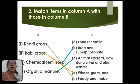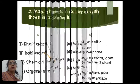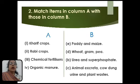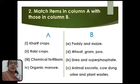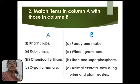urine and plant waste. So the answers are: kharif crops match with paddy and maize; rabi crops match with wheat, gram, pea; chemical fertilizers match with urea and super phosphate; whereas organic manure matches with animal excreta, cow dung, urine and plant waste.